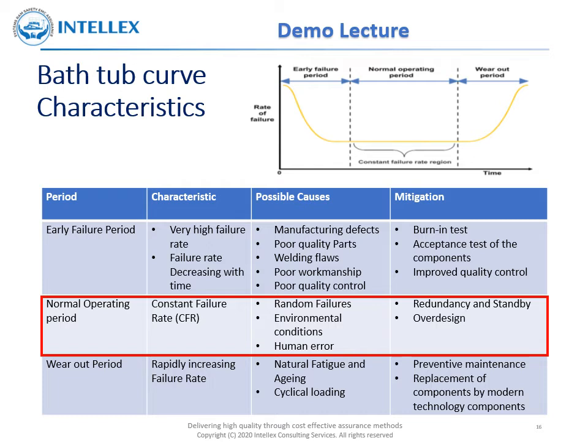The second period is the normal operating period. This is characterized by a constant failure rate, and the possible causes are random failures, which may be caused by environmental conditions, human failure, etc. The mitigation consists of provision of a standby system or over-design of the system.